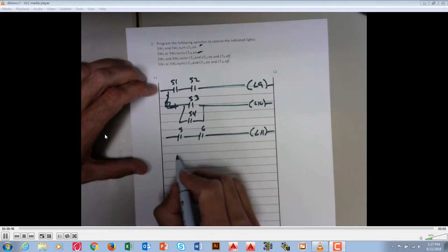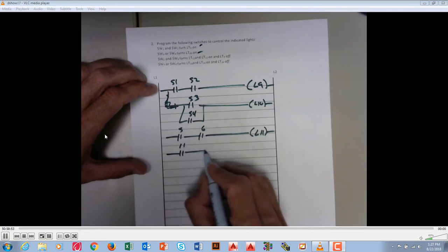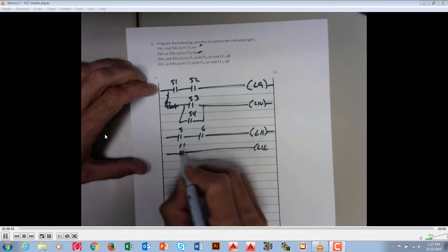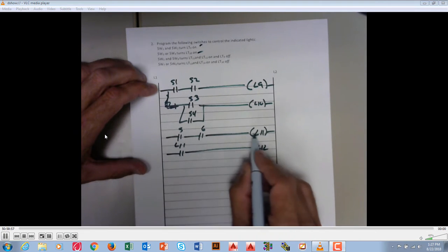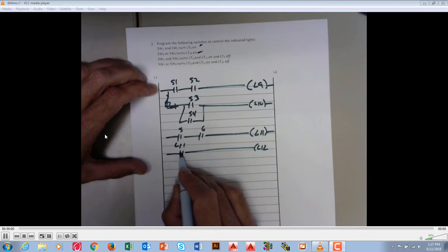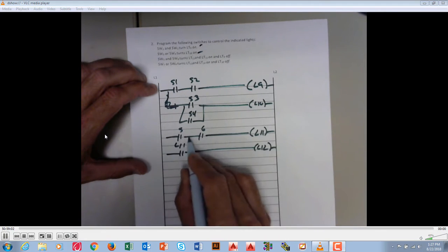Or we could have light 11, which is associated with that one, turn on 12. So because 5 and 6 turns on 11, that closes this contact to turn on 12. Either one of those works.